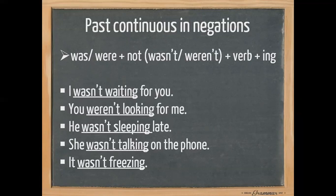Next: you weren't looking for me. You — the subject — with 'you' we use 'were', then negation 'not': weren't, then 'look' base form plus '-ing': looking for me, which is the complement. So: you weren't looking for me. Next: he wasn't sleeping late. He, with 'was', then we add 'not': wasn't, then 'sleeping' — verb base form plus '-ing' — complement 'late'. He wasn't sleeping late.